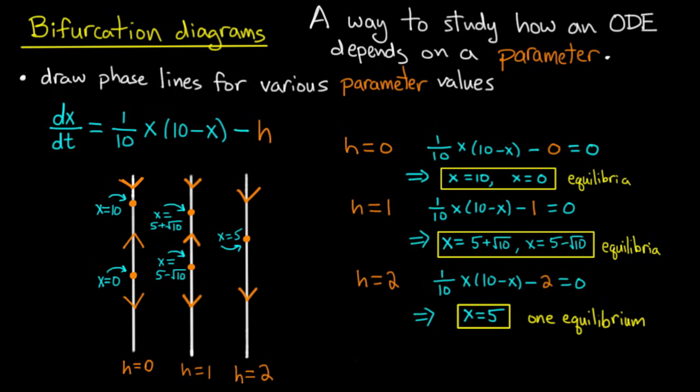I can keep drawing more phase lines. For instance h equals 3, I'll find there are no equilibria and everywhere dx/dt is negative. And again, I find that by simply plugging in h equals 3 into the right-hand side of the equation, setting it equal to 0, and finding there are no real roots x and hence no equilibria. And in fact that quantity on the right-hand side is always negative, hence the arrow is pointing down everywhere.